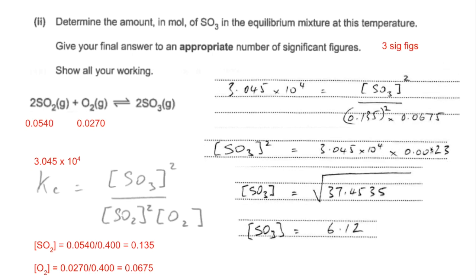But remember, we're in moles per decimeter cubed at the moment, and they wanted the number of moles. So moles equals concentration times volume, so it comes out, to three significant figures, at 2.45.